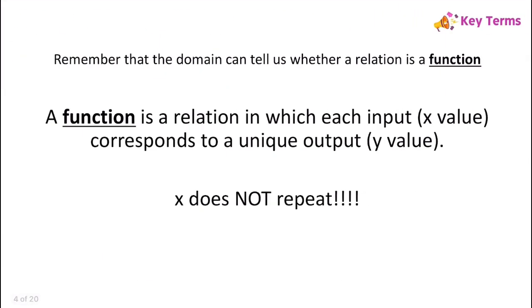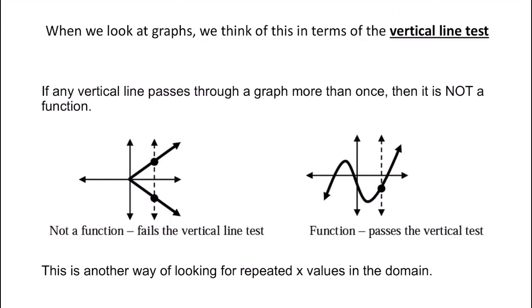The domain can tell us whether a relation is a function. A function is a relation in which each input, or x value, corresponds to a unique output, or y value — the x values do not repeat. The way to figure this out when looking at a graph is the vertical line test: if any vertical line passes through a graph more than once, then it is not a function. In this example, a vertical line passes through the graph more than once, so it fails the vertical line test.